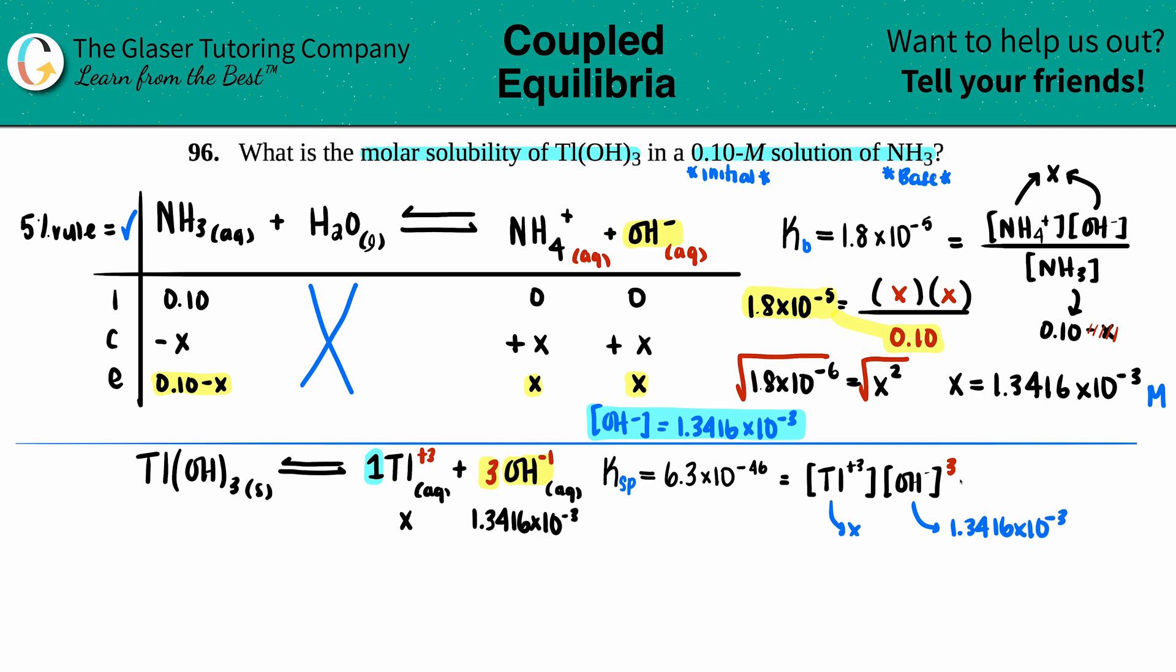Okay, remember, no solids in the Ksp equation, so we don't care about that. So let's see. Tl is x, and this is 1.3416 × 10⁻³. For all of you who are asking why we didn't do an ICE table for this, it's because this Ksp is so small there is no way that we have to do the quadratic here. So I'm just gonna bypass it. So 6.3 × 10⁻⁴⁶ equals...